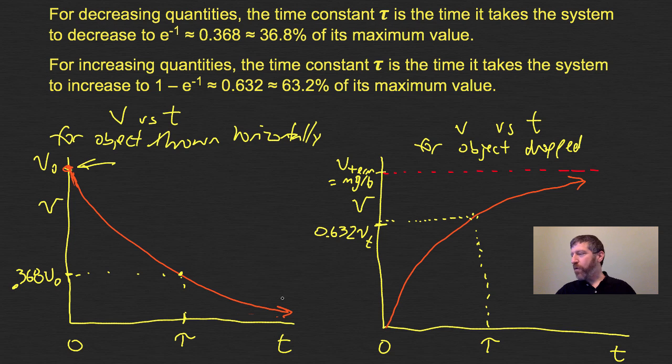It never gets to zero, nor does it ever get to terminal velocity. But we can have a definite time where it gets to 36.8% of the initial velocity, or 63.2% of the terminal velocity. That's what we define as tau.